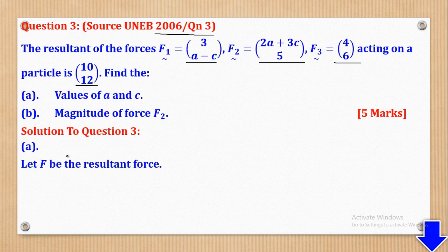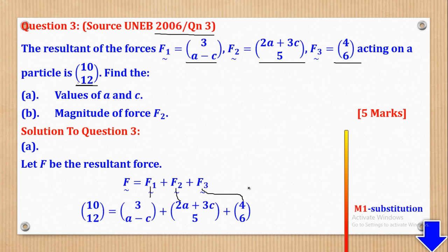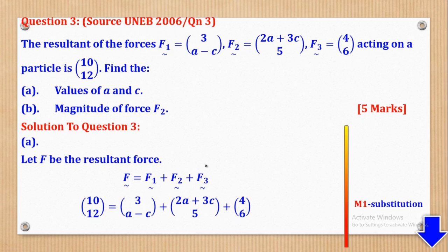We shall say let F be the resultant force, so F = F1 + F2 + F3. F is (10, 12), so we substitute: F = (10, 12), and F1, F2, and F3 are substituted accordingly. You will get 1 mark for substitution.